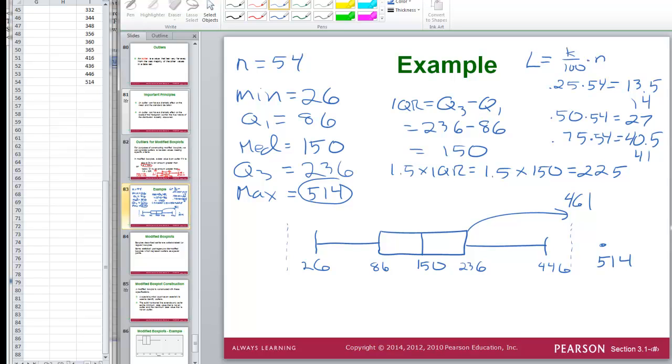If you're asked to do the five number summary, go ahead and use the min and max from the actual set of data. If you want, you can do the min and max that would actually be the whiskers. That's fine. I will accept either. Most textbooks are going to use min and max of the data set.